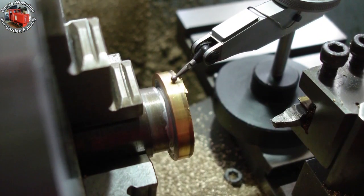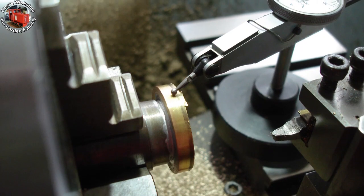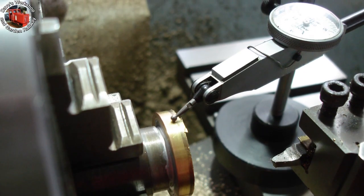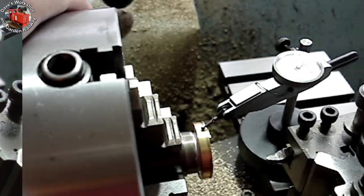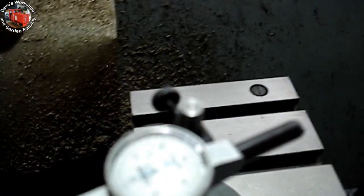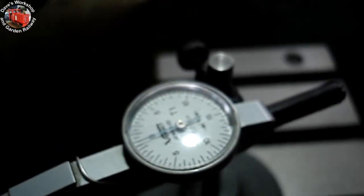After a good washing off under a running tap and a scrubbing, it's back in the four jaw chuck. Clocking the cylinder cover. I managed to get it pretty much spot on. It doesn't really need to be.